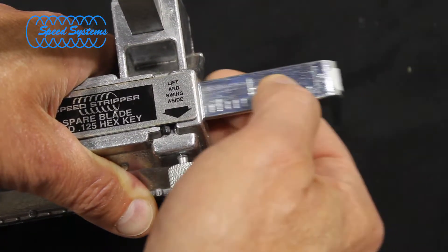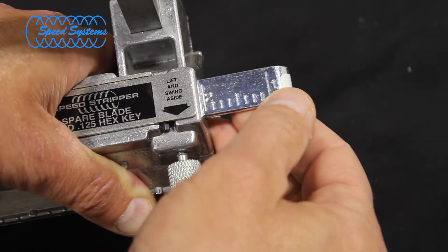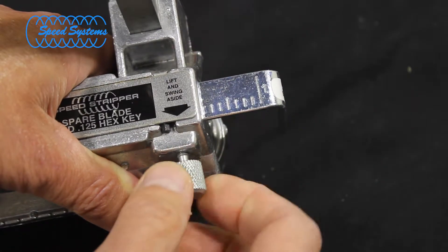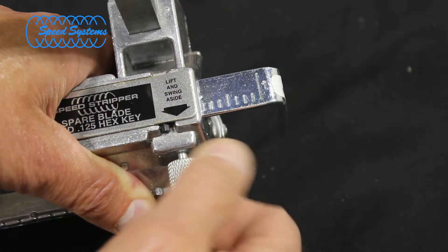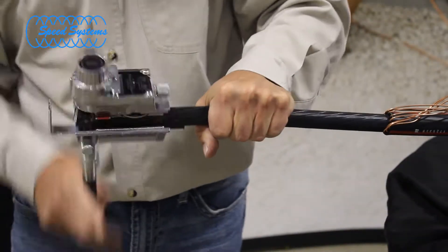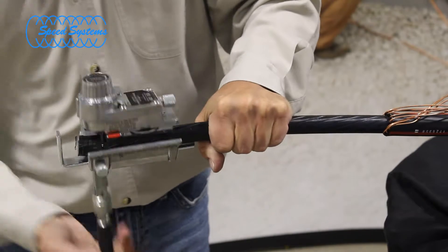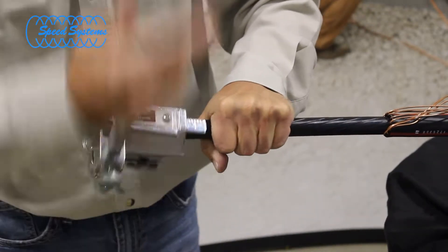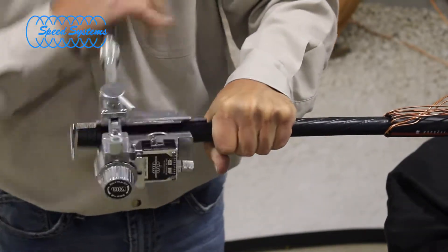The 1646X scale gauge accessory allows you to easily set the correct strip-back length. Set the scale gauge to the length specified in the instructions. Spiral the tool down the cable until the conductor hits the scale gauge. The tool automatically squares off the cut when using the scale gauge accessory.